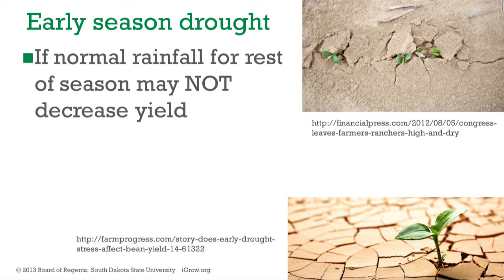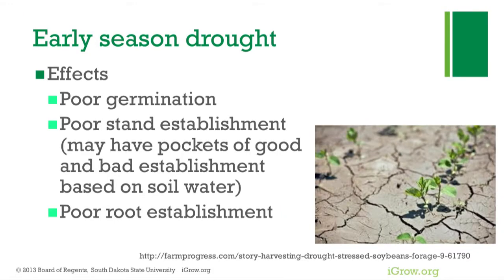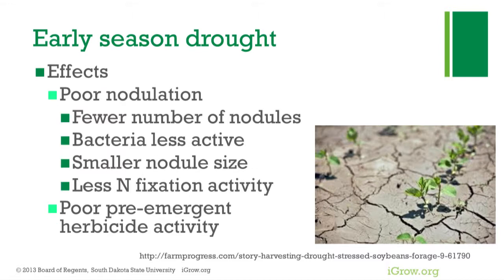If you have spring drought you can still have good yield because soybeans can compensate somewhat. But early season drought affects germination — you have poor stand establishment, poor root establishment, poor nodulation, fewer nodules, less active bacteria, smaller nodule size, and less nitrogen fixation activity. Also, a pre-emergence herbicide won't have much activity, so you'll likely need to come back with a post-emergence herbicide earlier in the season.